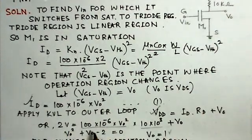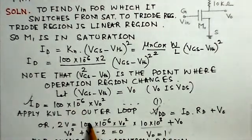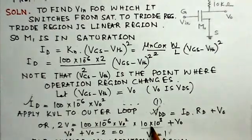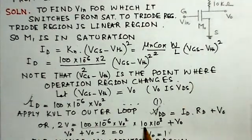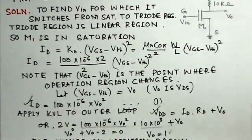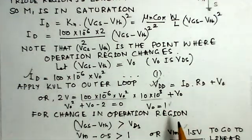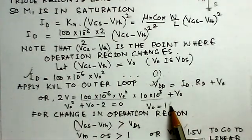So, VDD is given to be 2 volts. ID, substituting from here, the value of ID RD is 10 kilo ohms. This is the value for RD and this is V0. From this equation, we determine the value for V0 and we get the value of V0 to be 1.